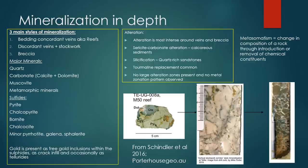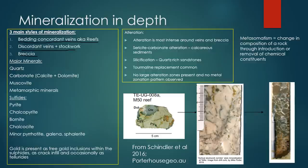Looking at the mineralisation at Telfer in more depth, we get bedding-concordant veins or reefs, concordant veins and stockwork, and also breccia. Some authors think this arrangement of mineralisation occurs in that order — starting with the reef mineralisation, then another hydrothermal pulse producing the discordant veins and stockwork, and then the breccia at the end. Other authors say they all formed at the same time. It's a little debated, but the point is we have those three styles.